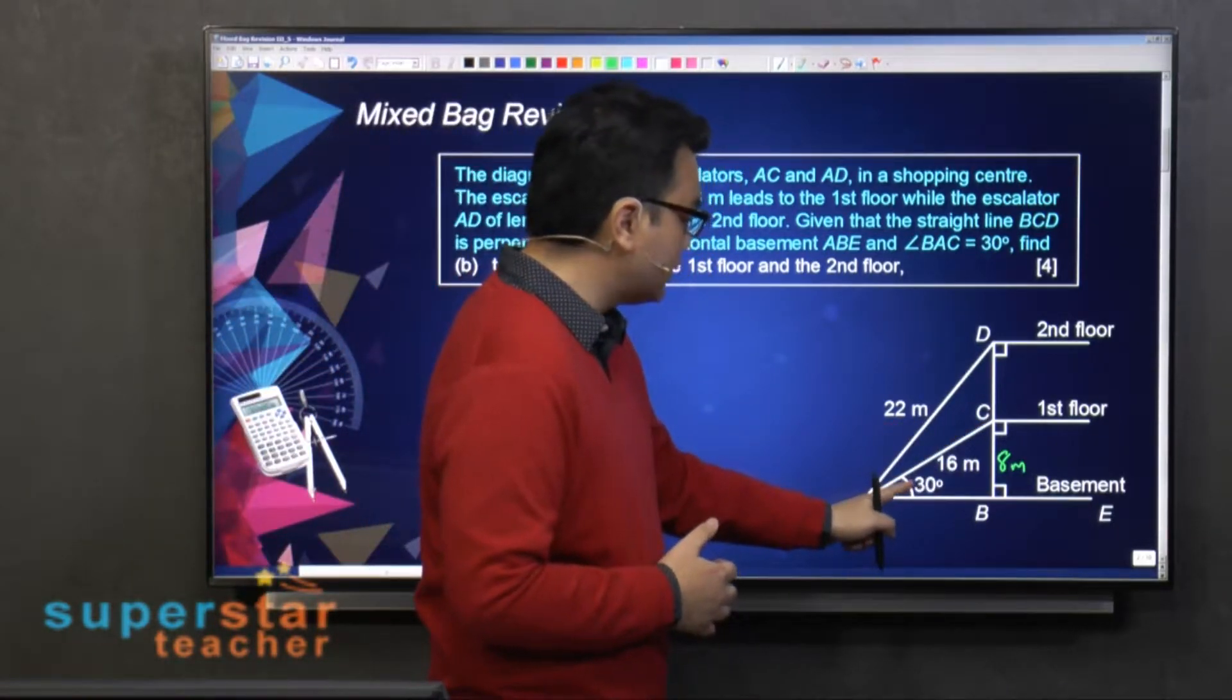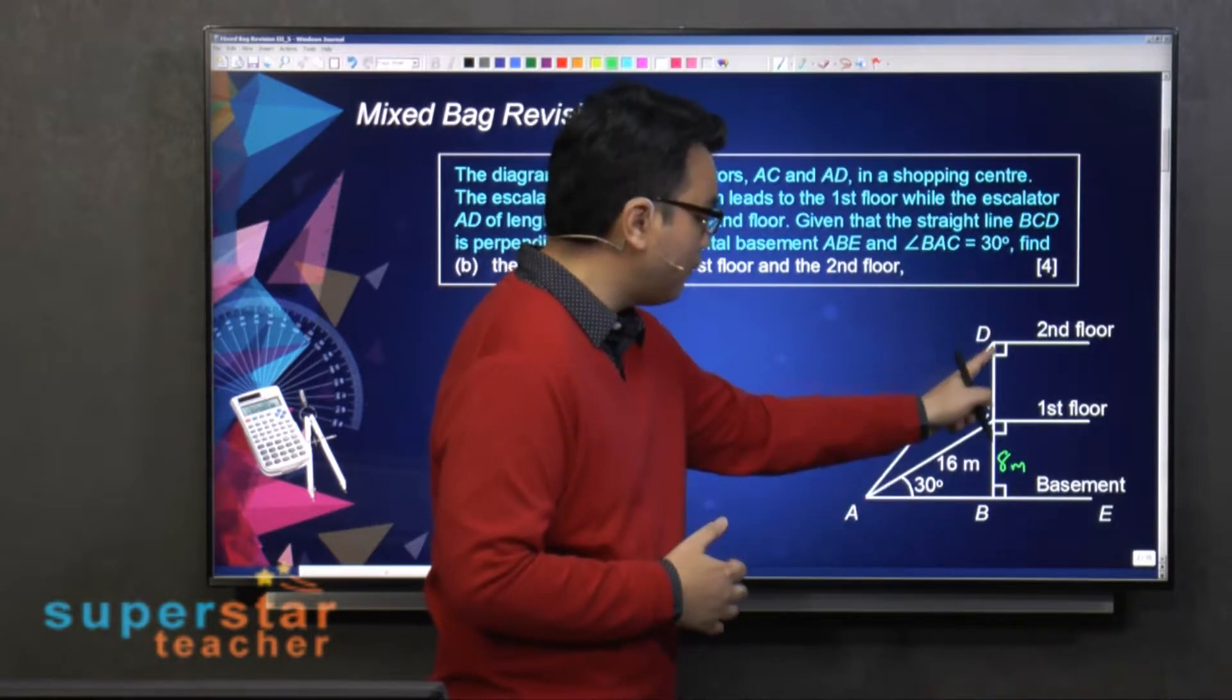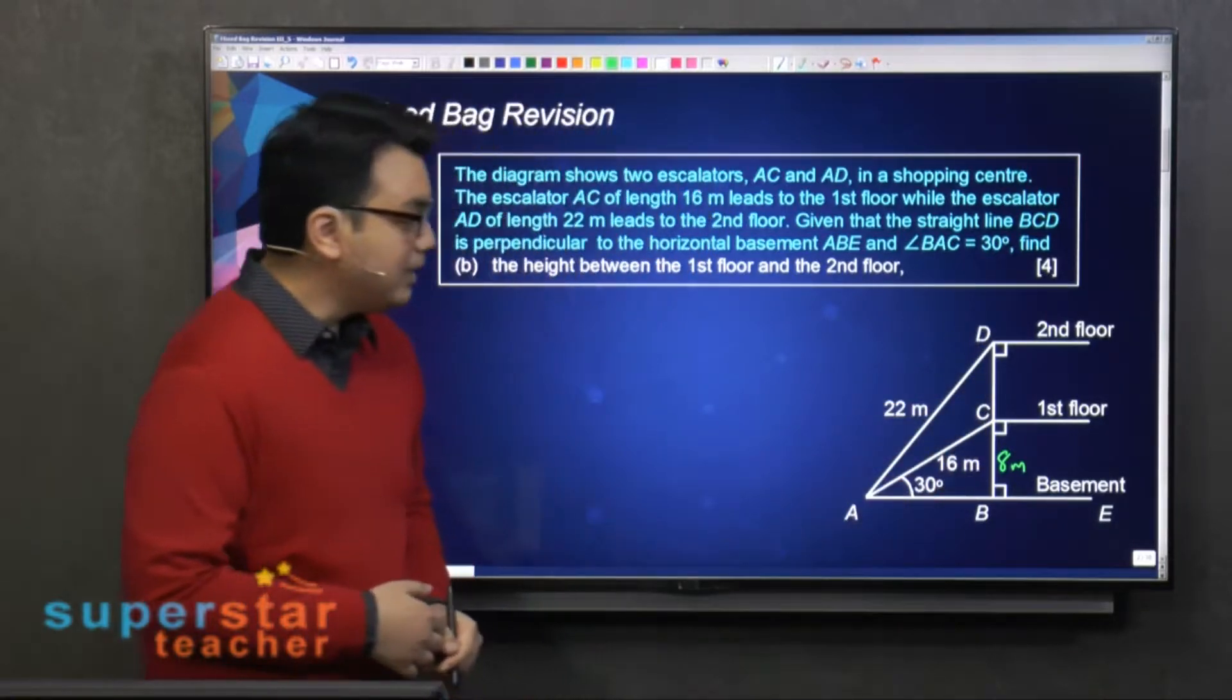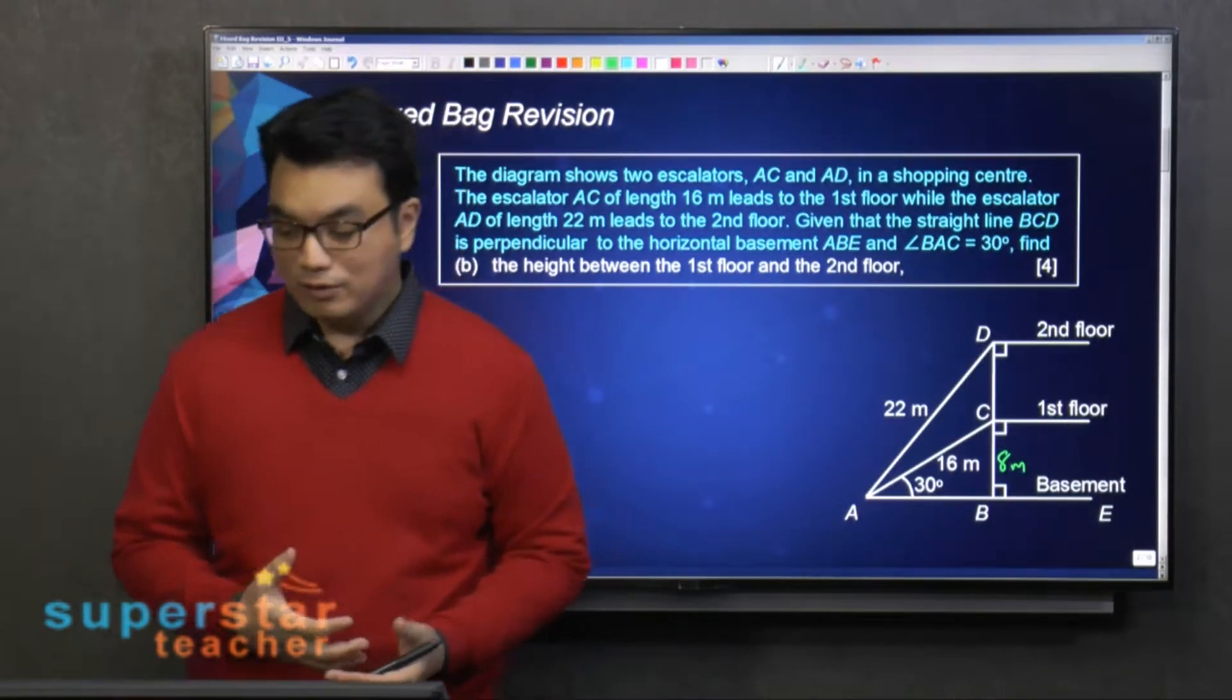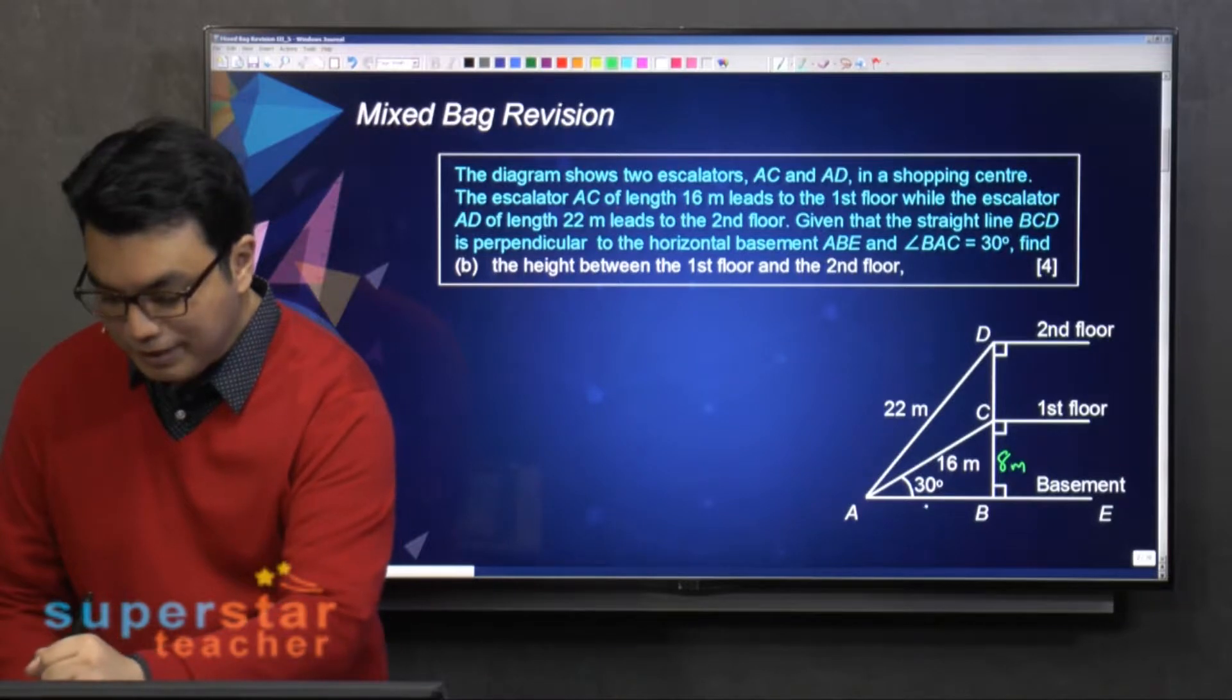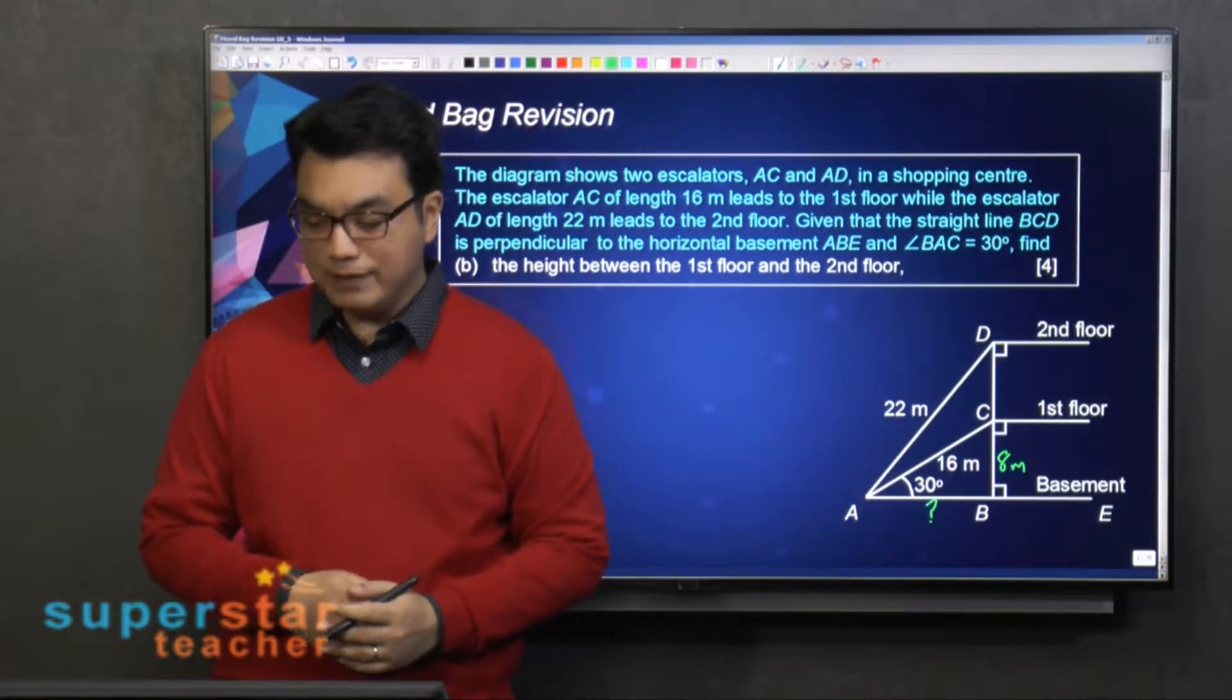We use this angle over here, 30 degrees. We say opposite over hypotenuse, and we can find BD. Can we just do that straight away? No, we can't, right? Okay, what we have to do is to find AB first. Okay? We have to find AB first.